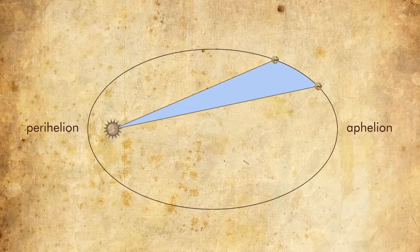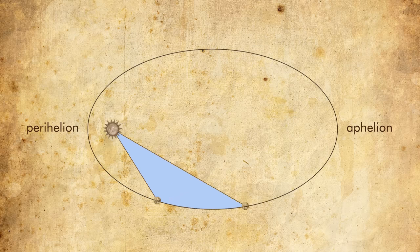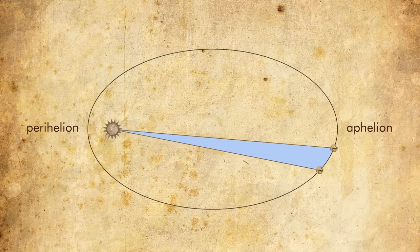So if Mars is approaching perihelion, the point in the orbit nearest to the Sun, it's traveling faster than if it's at aphelion, the point that's farthest away.